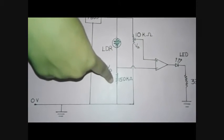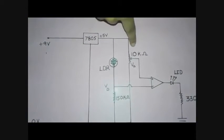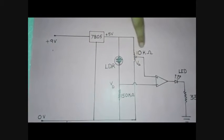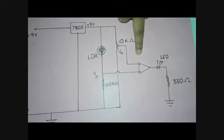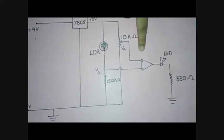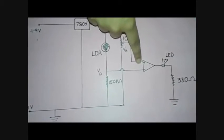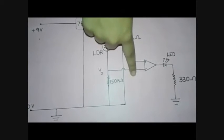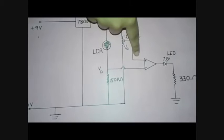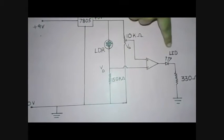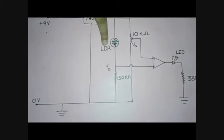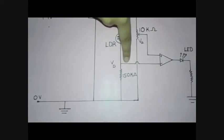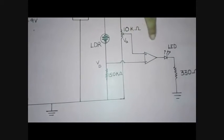This is a 150kΩ resistor. This is the symbol for a 10kΩ potentiometer. Let the voltage here be VD and the voltage here be VA. In this circuit, IC 741 is used as a comparator — it compares two inputs and gives a single output. This is the non-inverting terminal of the IC, and this is the inverting terminal. If the voltage at the non-inverting terminal is greater than that of the inverting terminal, the output LED glows. When light falls on the LDR, its resistance decreases, then VD increases compared to VA, and the light does not glow.